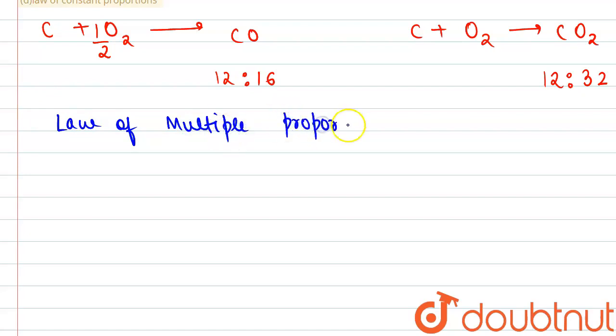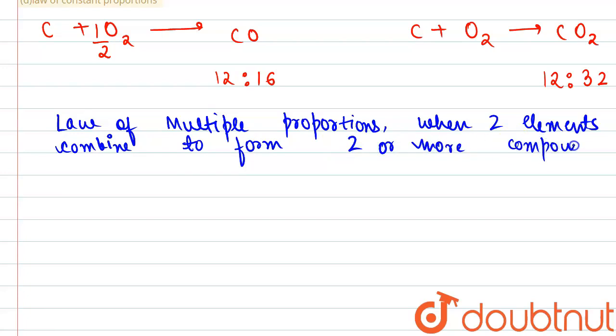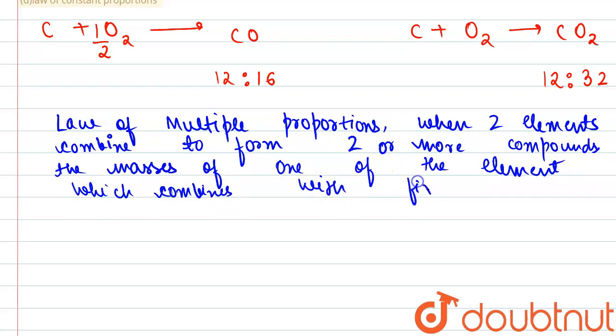According to the law of multiple proportions, we can just pen it down for easy clarification: when two elements combine to form two or more compounds, then the masses of one of the element which combines with fixed mass of other element bear a simple whole number ratio.